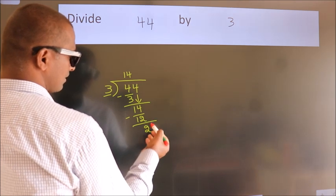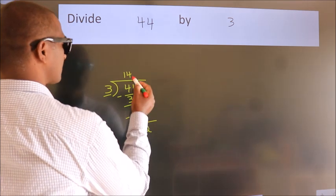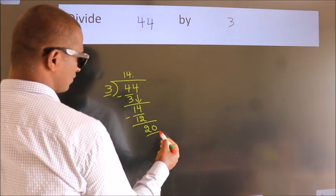After this, no more numbers to bring down. So, what we do is, we put a dot and take 0. So, 20.